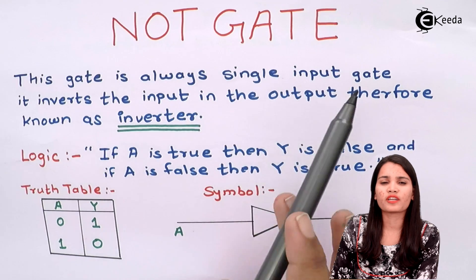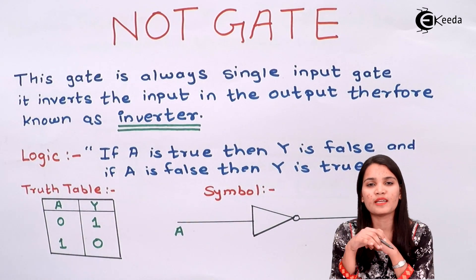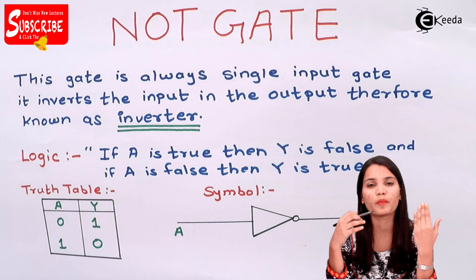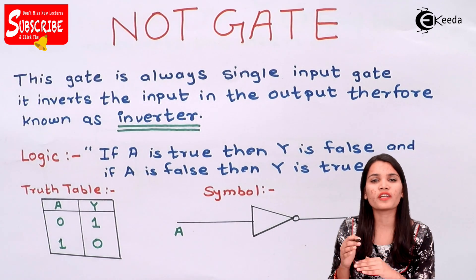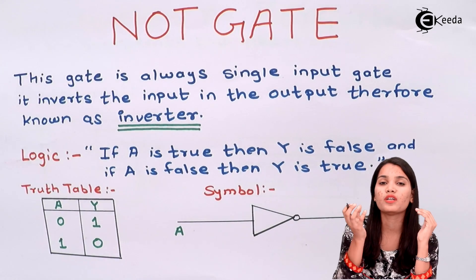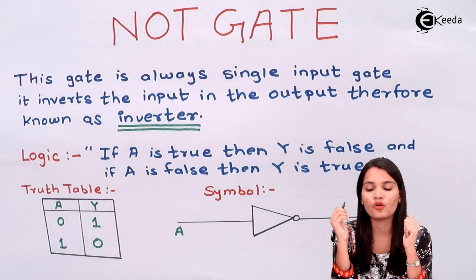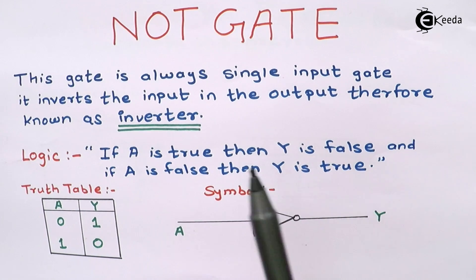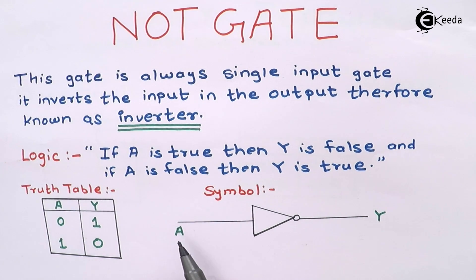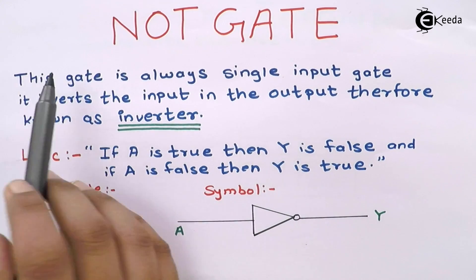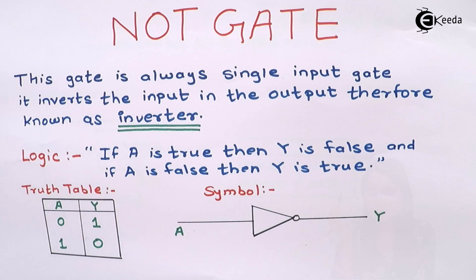Let's see the NOT gate. Till now we have seen the different types of gates, and in those gates there are always two or more inputs. But here in the NOT gate we have only one input. This gate always has a single input and a single output, and it inverts the input at the output. Therefore it is known as an inverter.